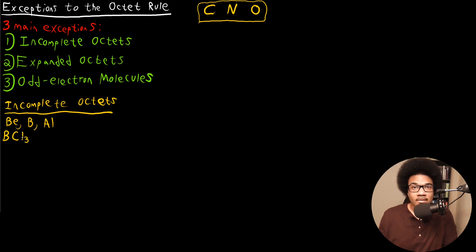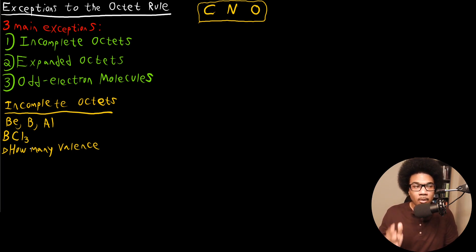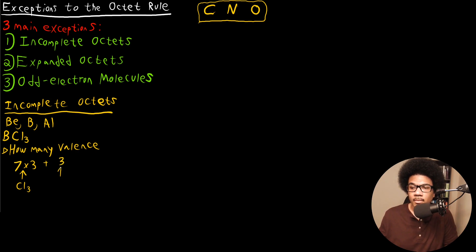For BCl3, let's build its Lewis structure. First we want to ask ourselves: how many valence electrons do we have in total in this molecule? We know that there are three chlorines, and chlorine has seven valence electrons, so we have seven times three. For boron, boron is going to have three valence electrons. So you do seven times three, which is 21, plus three gives you 24 valence electrons total.